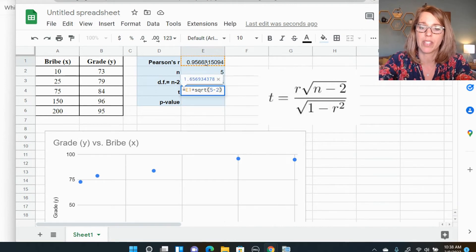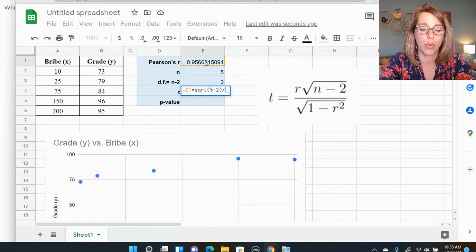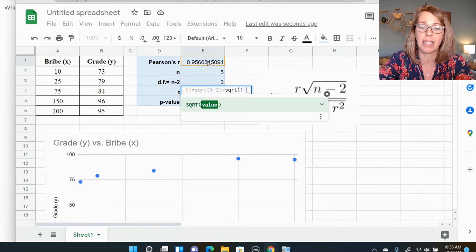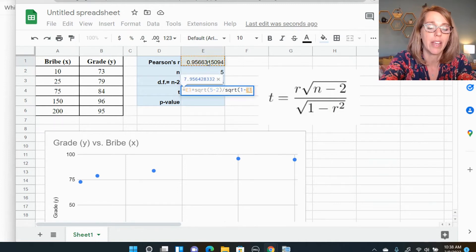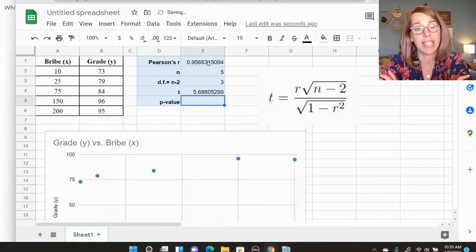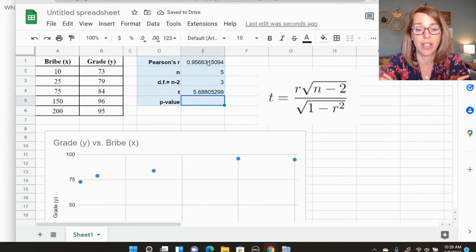If you want parenthesis divided by the square root SQRT of one minus R squared. So one minus, I'm going to click on my R value again, caret on the six squared, and then enter. This gives me my T statistic, five point six eight eight.